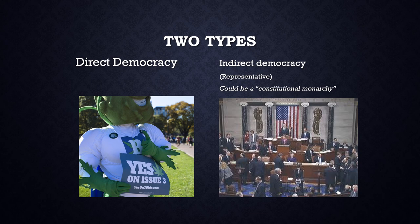Most laws in a democracy, though, are made via indirect democracy. Indirect democracy means citizens vote for representatives who form a legislature. These representatives then vote on laws. In the U.S., all national laws are made by indirect democracy, and most state laws are made that way as well. Therefore, the U.S. has elements of both direct and indirect democracy.